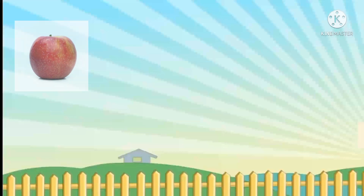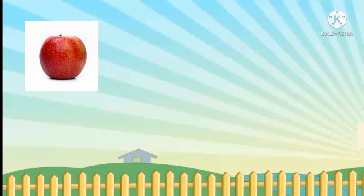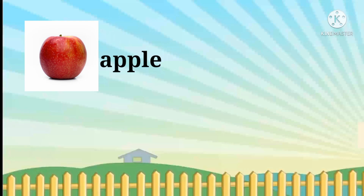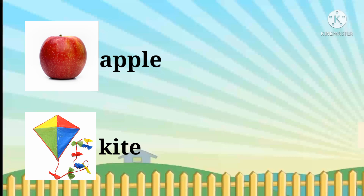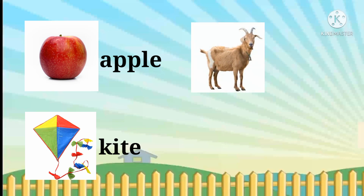Look at this. What is this? This is an apple. Then, look at here. What is this? This is a kite. Then, what is this? This is a god.